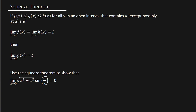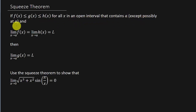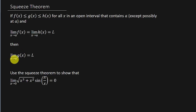What's going on everybody? Got another video here for you. Let's look at the squeeze theorem — we use that to find limits. The squeeze theorem says that if f(x) ≤ g(x) ≤ h(x), in other words g(x) is between f(x) and h(x) for all x in an open interval containing a, except possibly at a, and the limit of f(x) and the limit of h(x) as x goes to a both equal L, then the limit of g(x) as x approaches a is also equal to L.